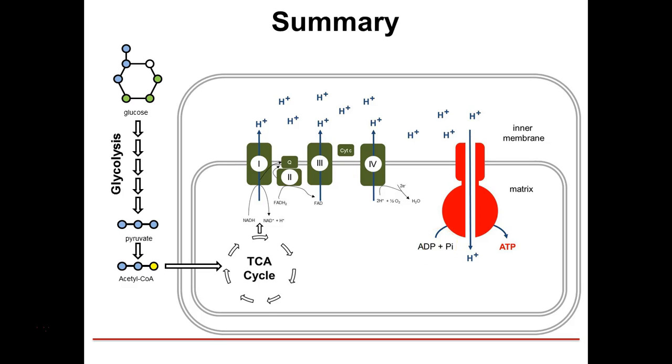So in summary, to make ATP, we need to drive the enzyme ATP synthase, shown here in red. This enzyme takes ADP, combines it with a phosphate group to produce our ATP. To do that, it uses the energy stored from a proton gradient. These protons move through this particular enzyme, and by it spinning around, it generates this particular molecule.